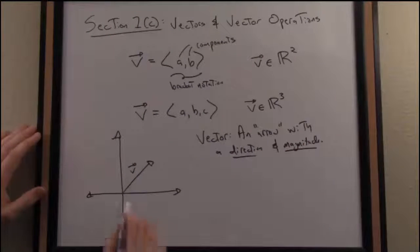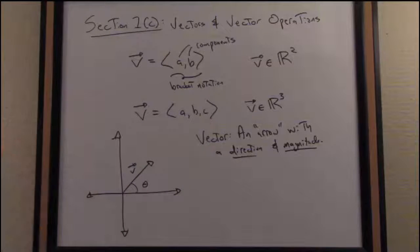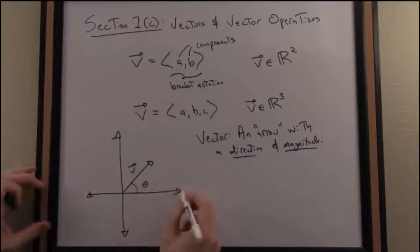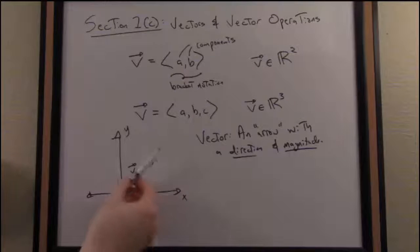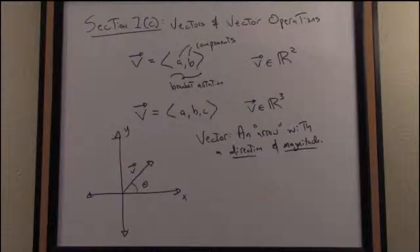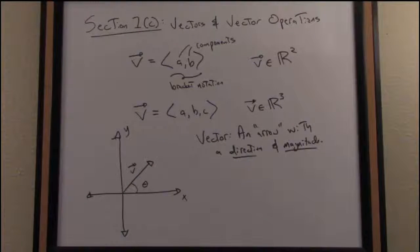Well, the direction, you can think of kind of an angle defined here with the x-axis. We'll call that theta as it's typical with vectors. You can think of this vector v that I've drawn in the plane. Here's my x-axis and my y-axis, of course. This vector has an angle associated with it that defines its direction. And the magnitude of that vector is just the length of the vector.